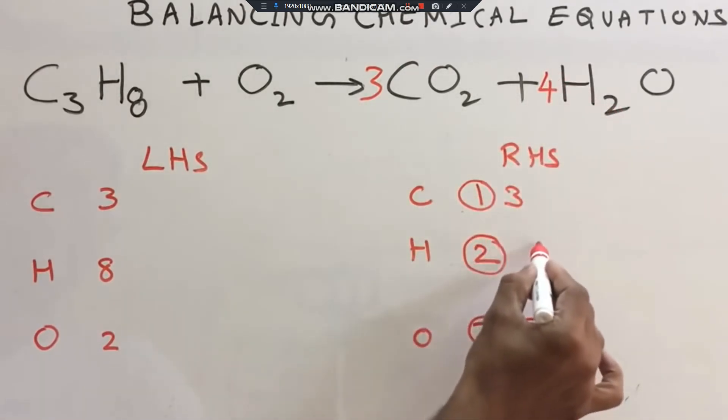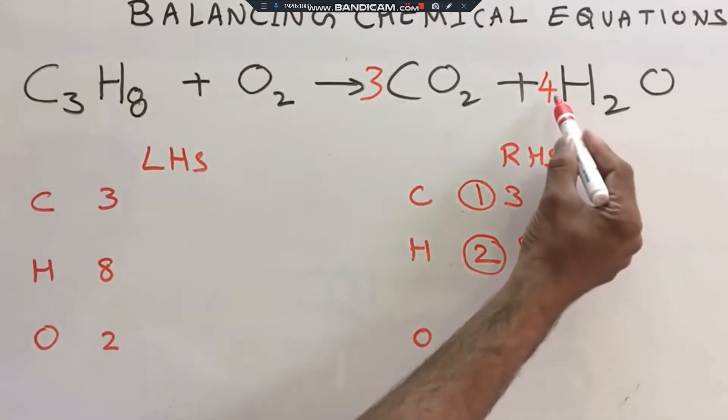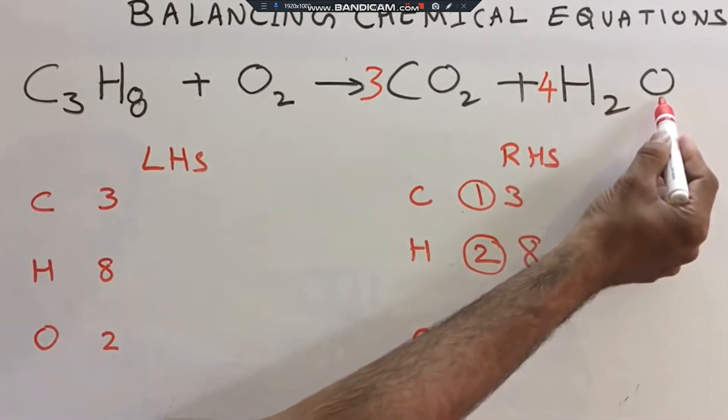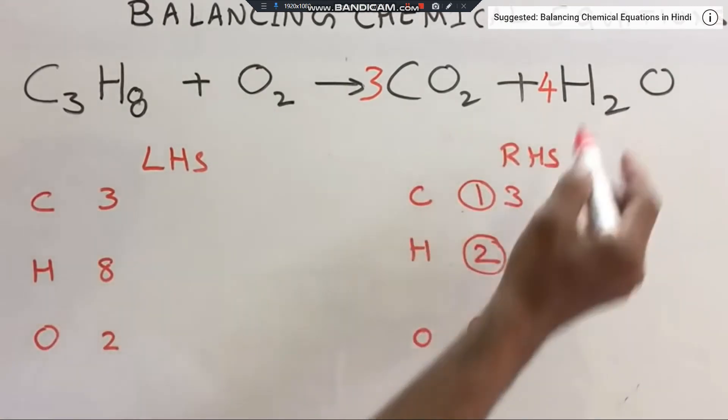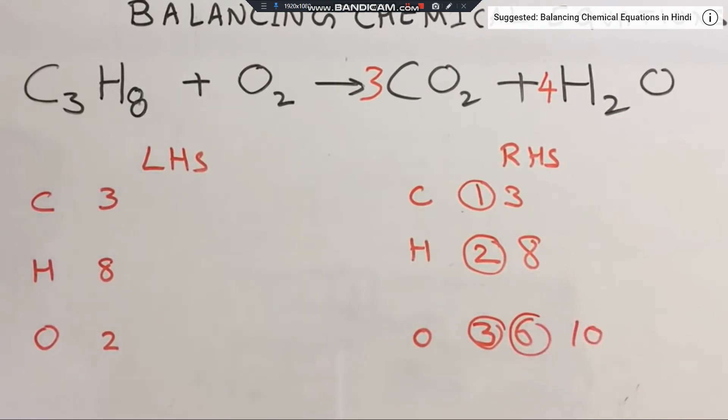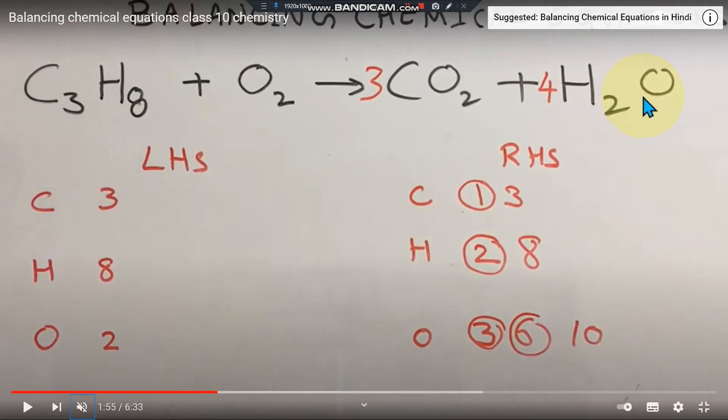Now for oxygen. Oxygen - we need to count. On the right side, 2 times 3 is 6, plus we have 4 H2O, so that's 4 more oxygens. So oxygen on the right: 2 times 3 is 6, plus 4, which means oxygen is 10 total. On the left side, we need to balance this. So oxygen needs to be 10, which means we put 5 in front of O2.